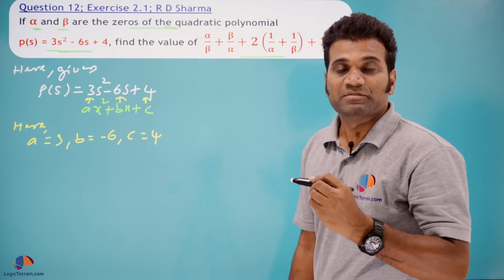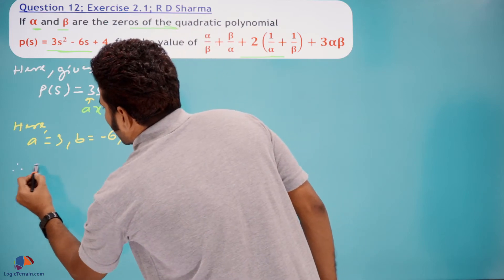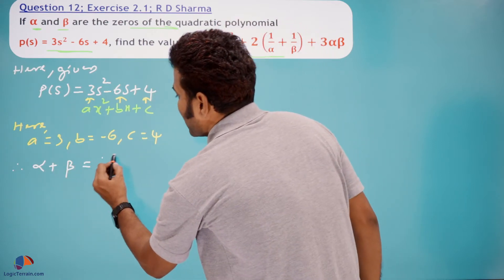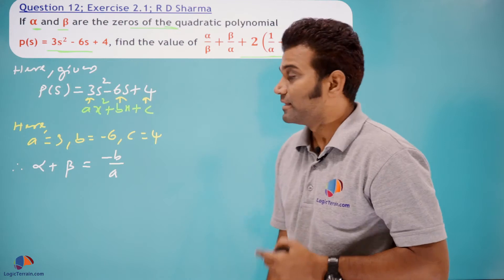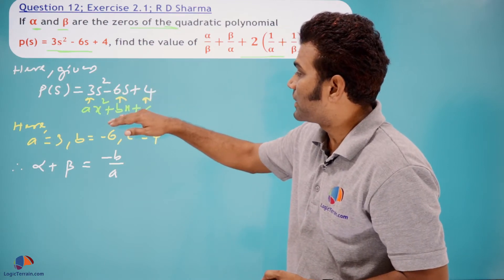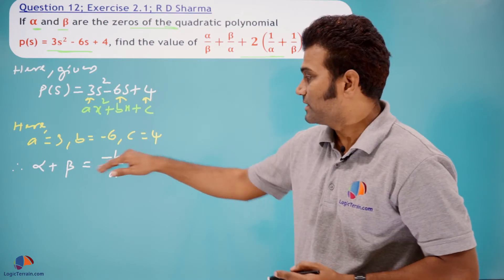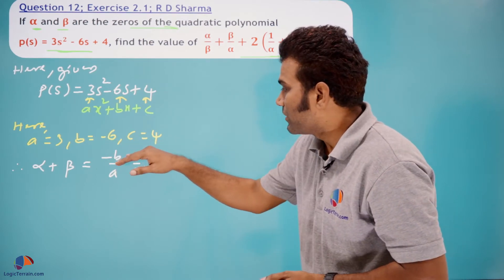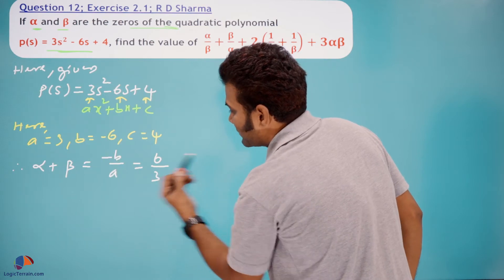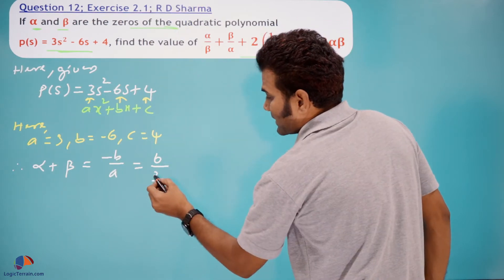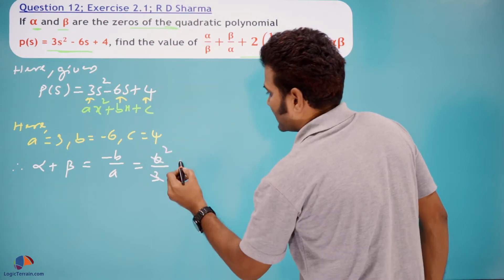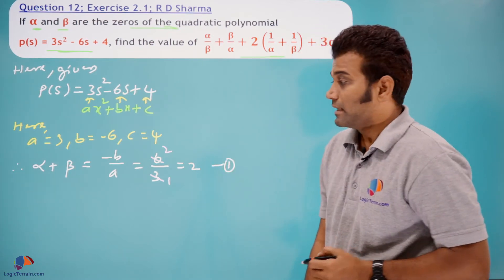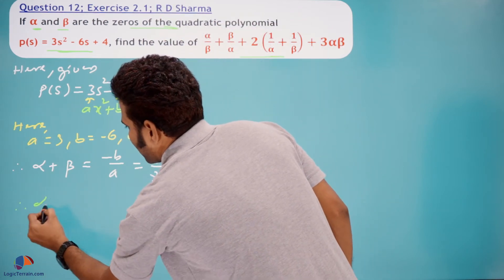Therefore, sum of zeros: alpha + beta = −b/a. Here −b is −(−6) = 6, and a = 3, so alpha + beta = 6/3 = 2. Let's call this equation (1).